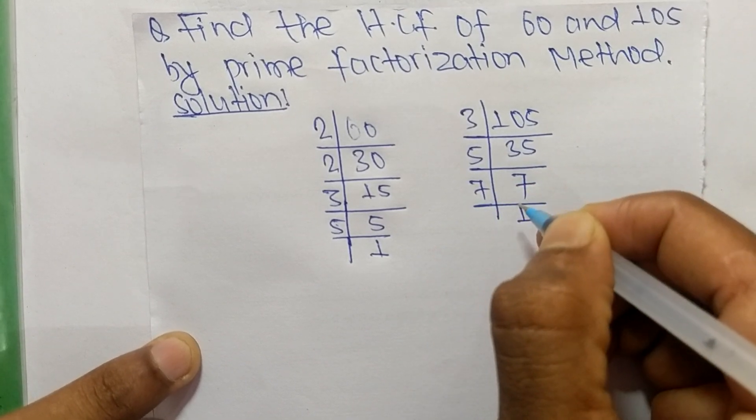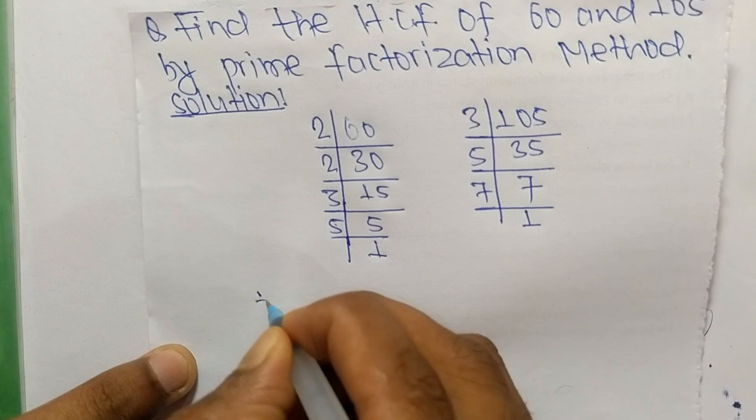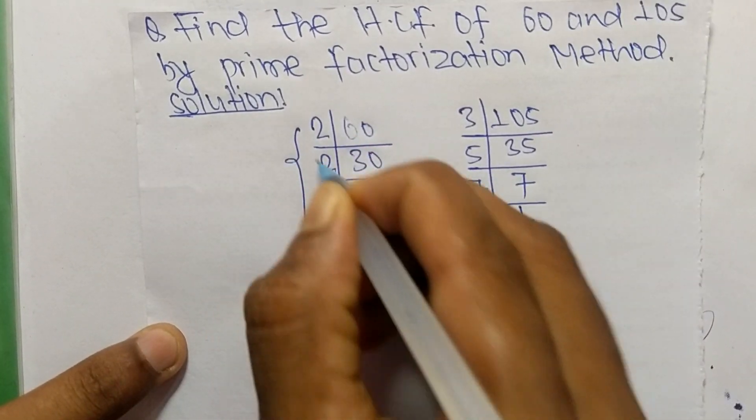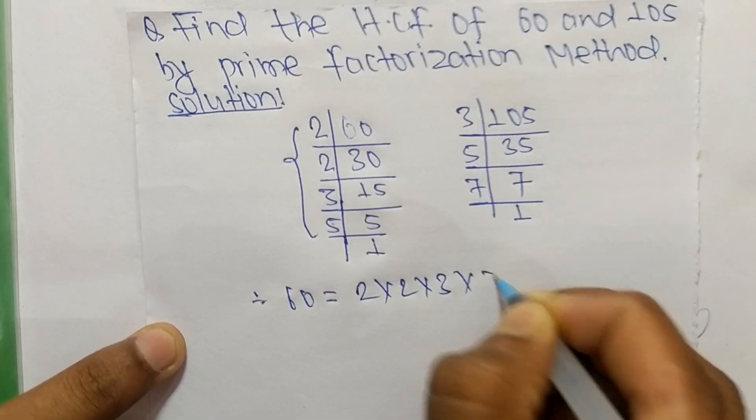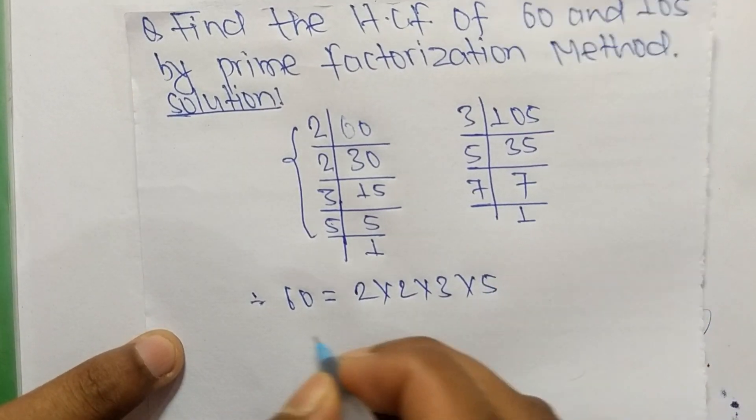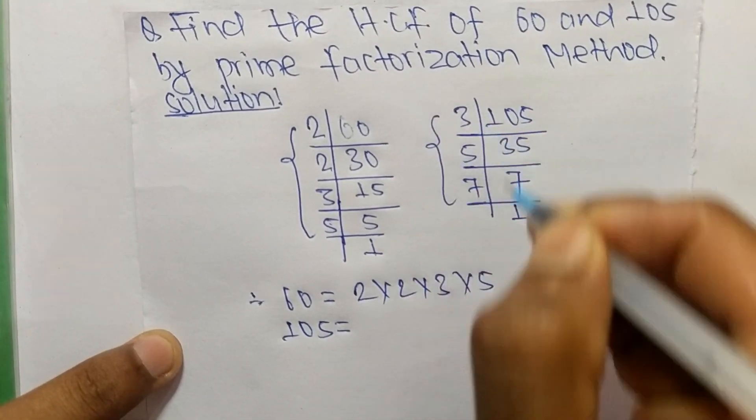So now from these prime factors we can write 60 is equal to 2 times 2 times 3 times 5. Like as 105 is equal to 3 times 5 times 7.